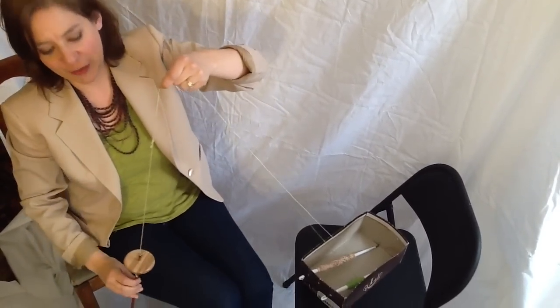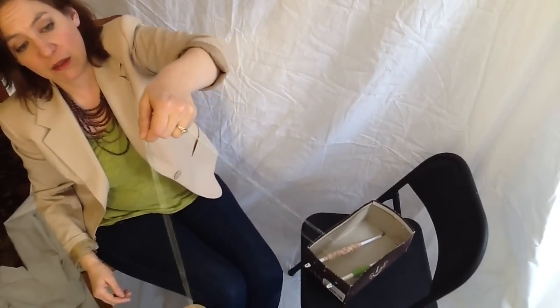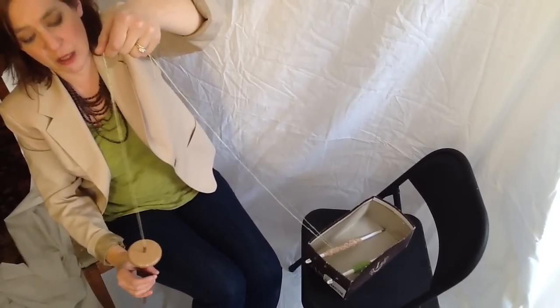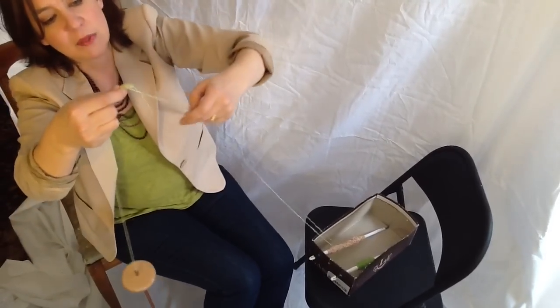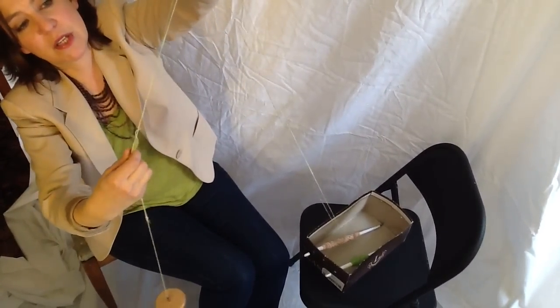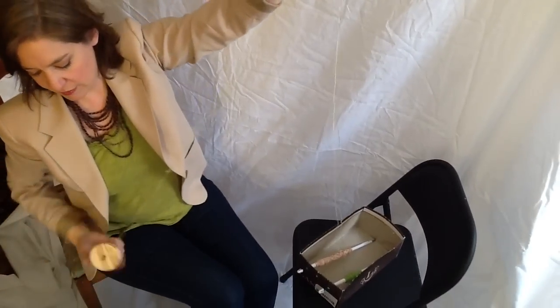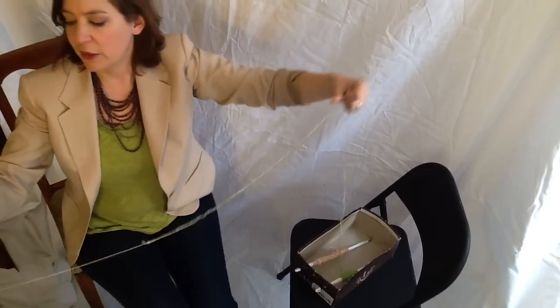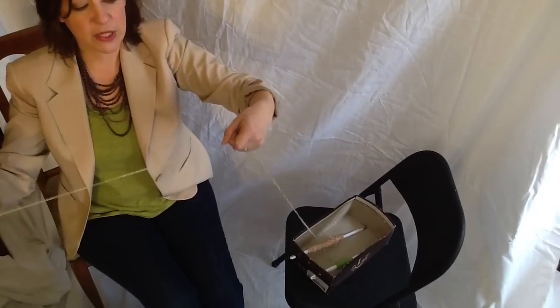So here I go. I'm spinning now towards my knee, the opposite direction, and I'm going to let the twist build up. I'm going to hold onto my two singles, and let the counter-clockwise twist literally helix the two singles together.